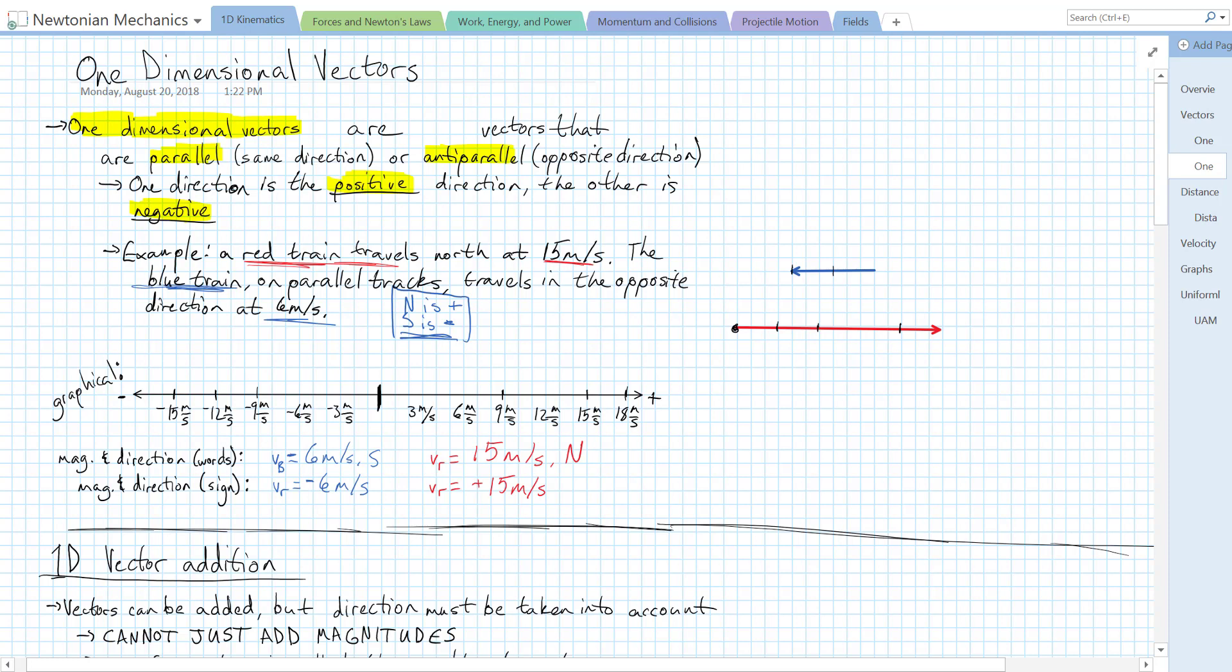And we can also represent these vectors on essentially a number line, where the length of the vector arrow represents the magnitude of the vector, and the direction is the direction. I already have a number line here, and I also have the vectors drawn out just for ease.